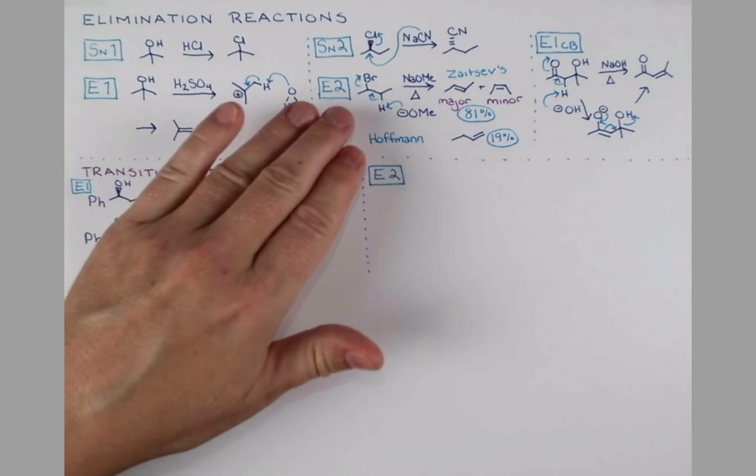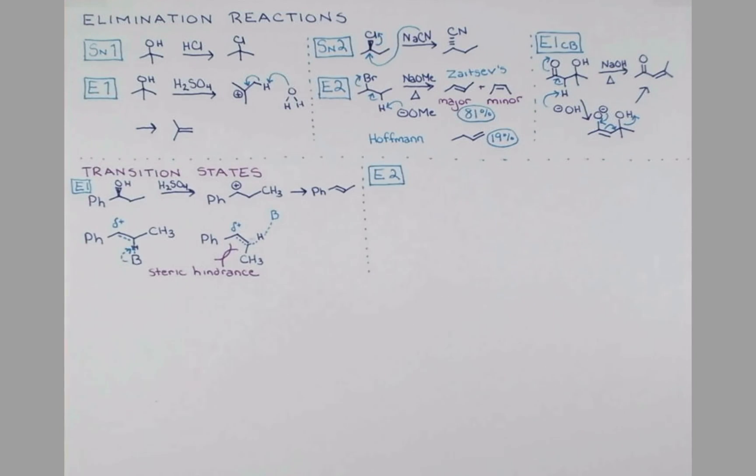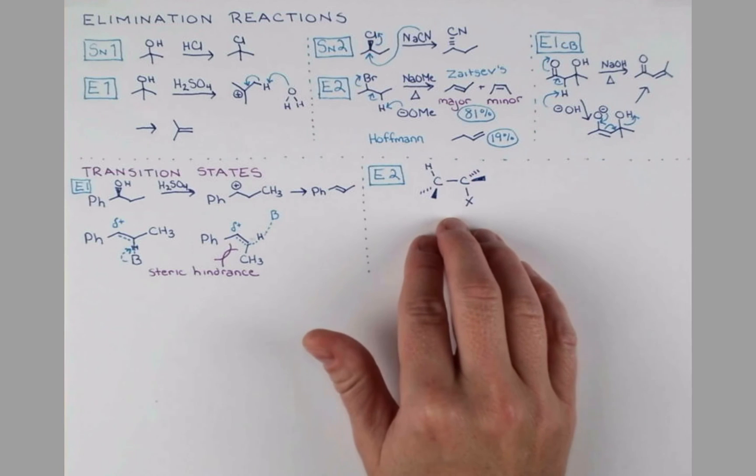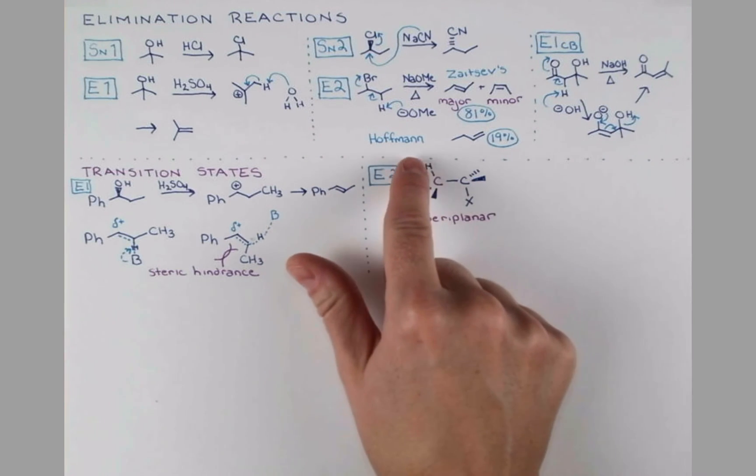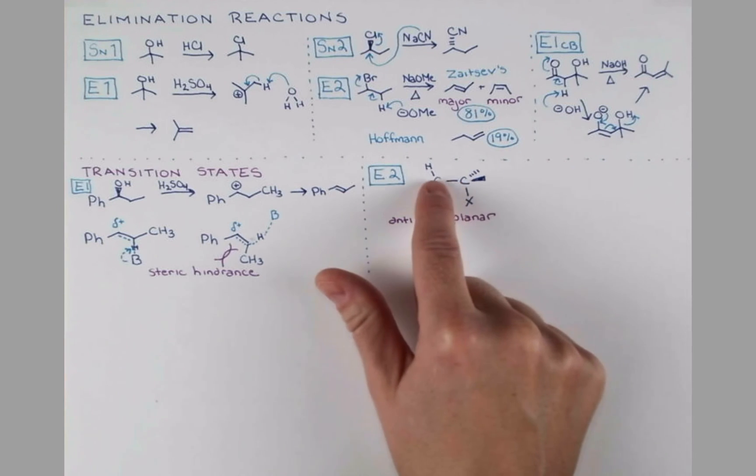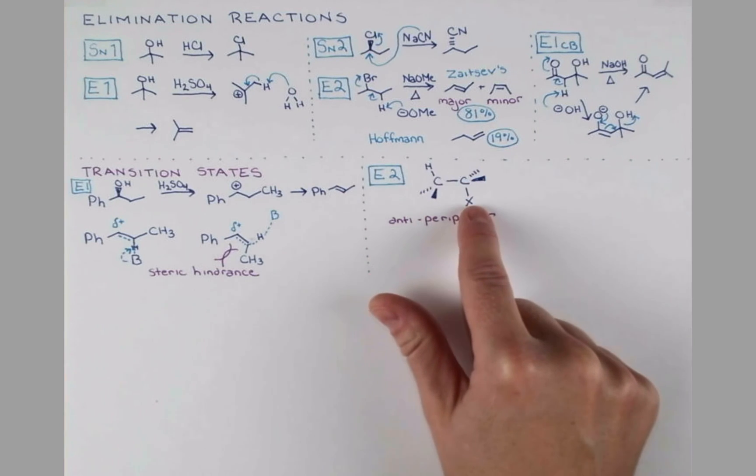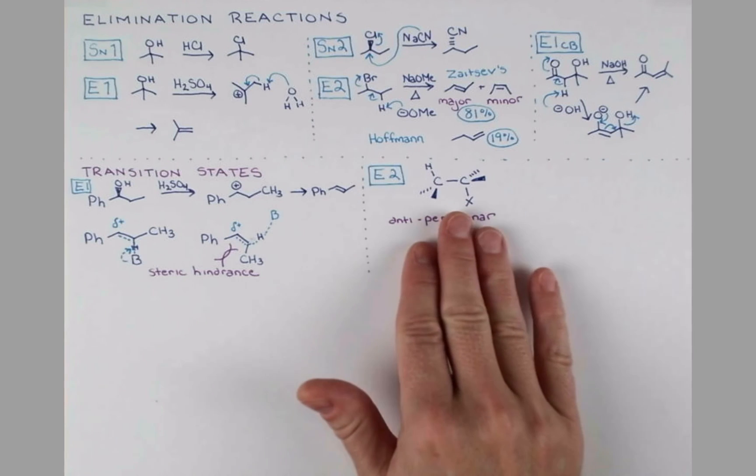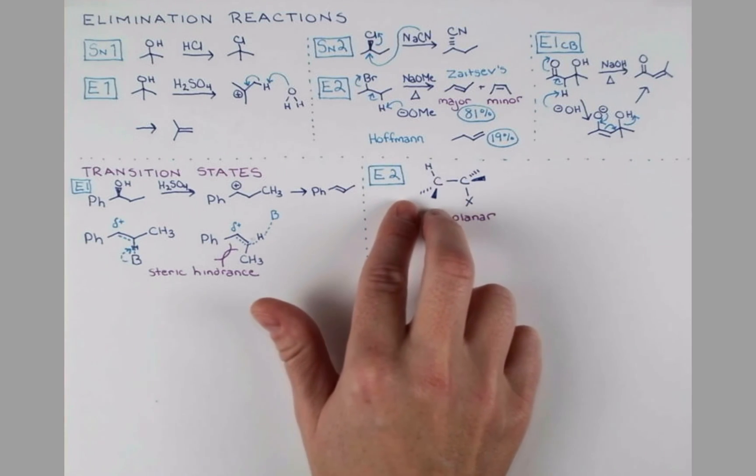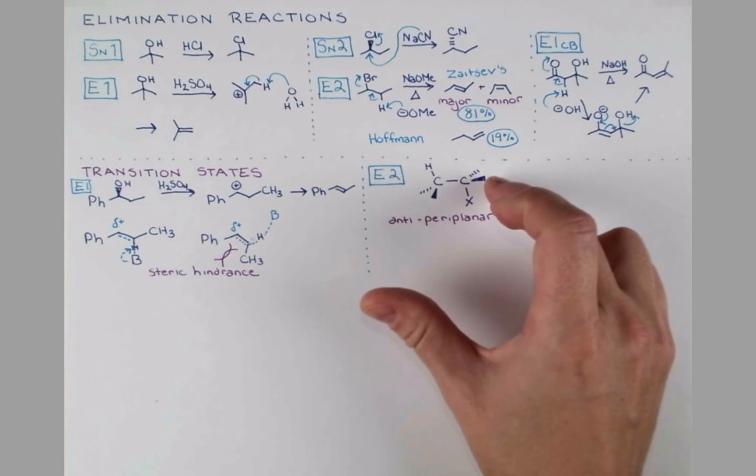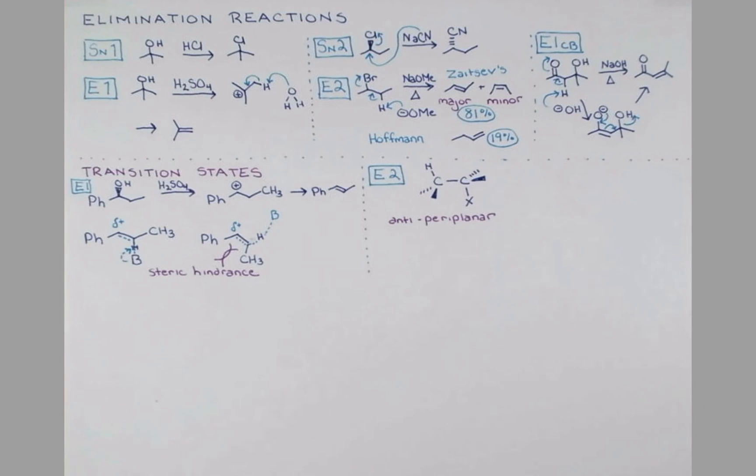In order to do this elimination all in one step, the molecule needs to adopt one of two conformations. This conformation is called anti-periplanar. The way this is drawn, this hydrogen, this carbon-carbon bond, and the leaving group are all in the same plane. They're drawn in the plane of the paper. Whereas these groups on the tetrahedral carbon are pointing forward and back and forward and back.